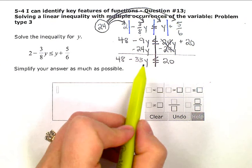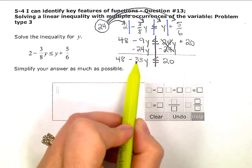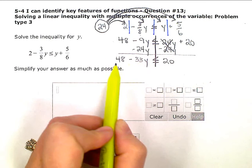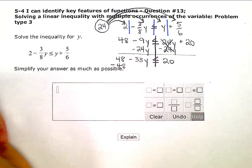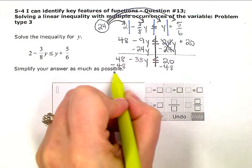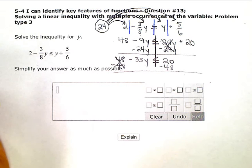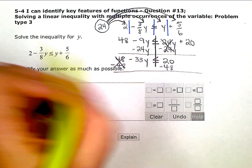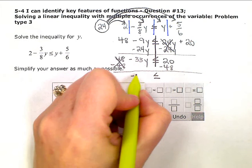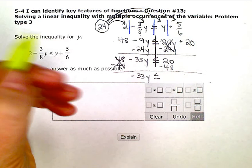Still trying to get the y by itself. So before I work on this term or the number directly attached to the variable, I want to get rid of anything else over here. So I need to zero out the 48. So I'm going to subtract 48 to keep it balanced. I have to do the same thing on the other side. And again, I'm subtracting, not multiplying or dividing by a negative. So my inequality symbol stays the same. So I'm left with negative 33y and 20 minus 48 is negative 28.